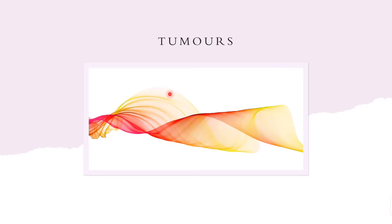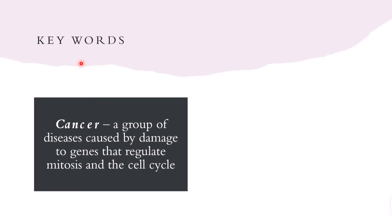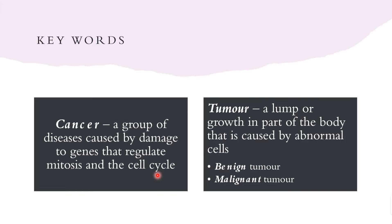Today's video is on tumors. First, we're going to have a look at some keywords. Cancer is a group of diseases caused by damage to genes — genes that regulate mitosis and the cell cycle. A tumor is a lump or growth in a part of the body caused by abnormal cells, and you can get two different types: benign tumors and malignant tumors.